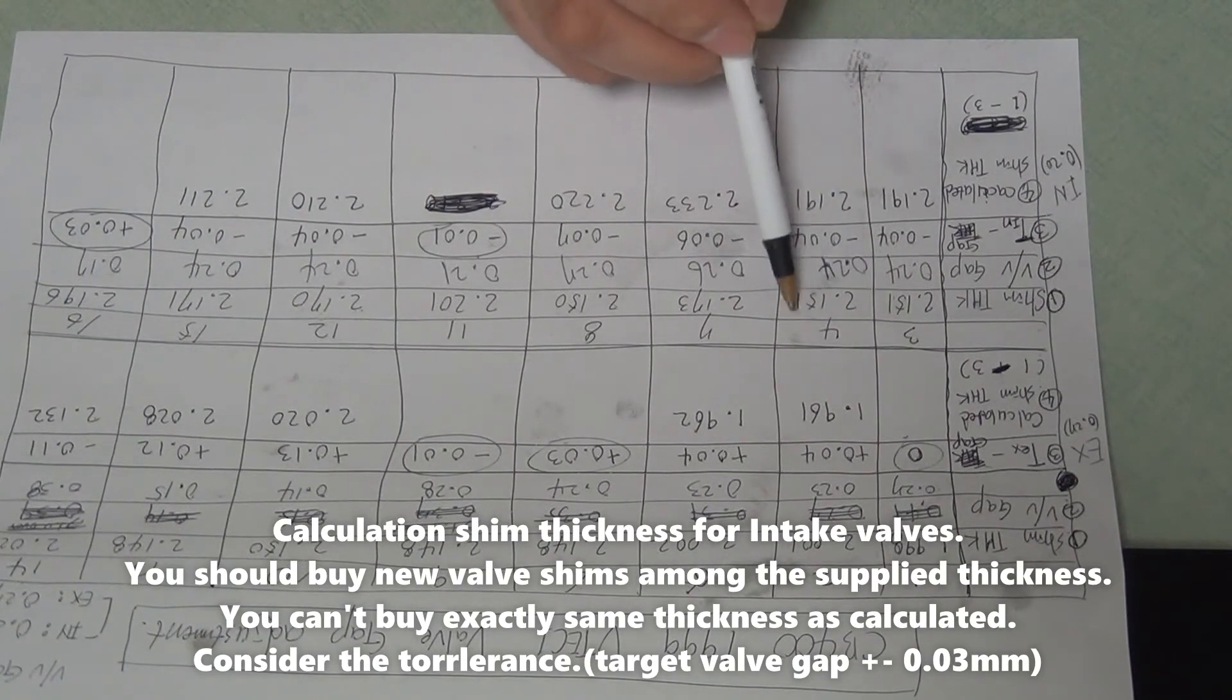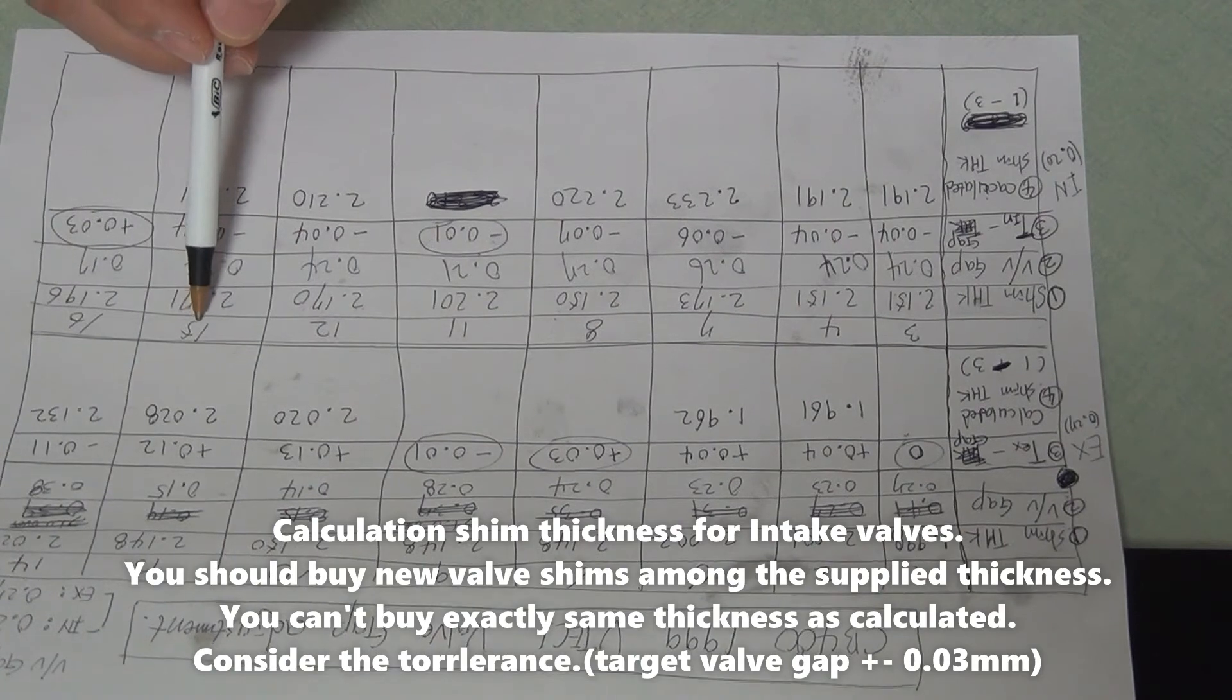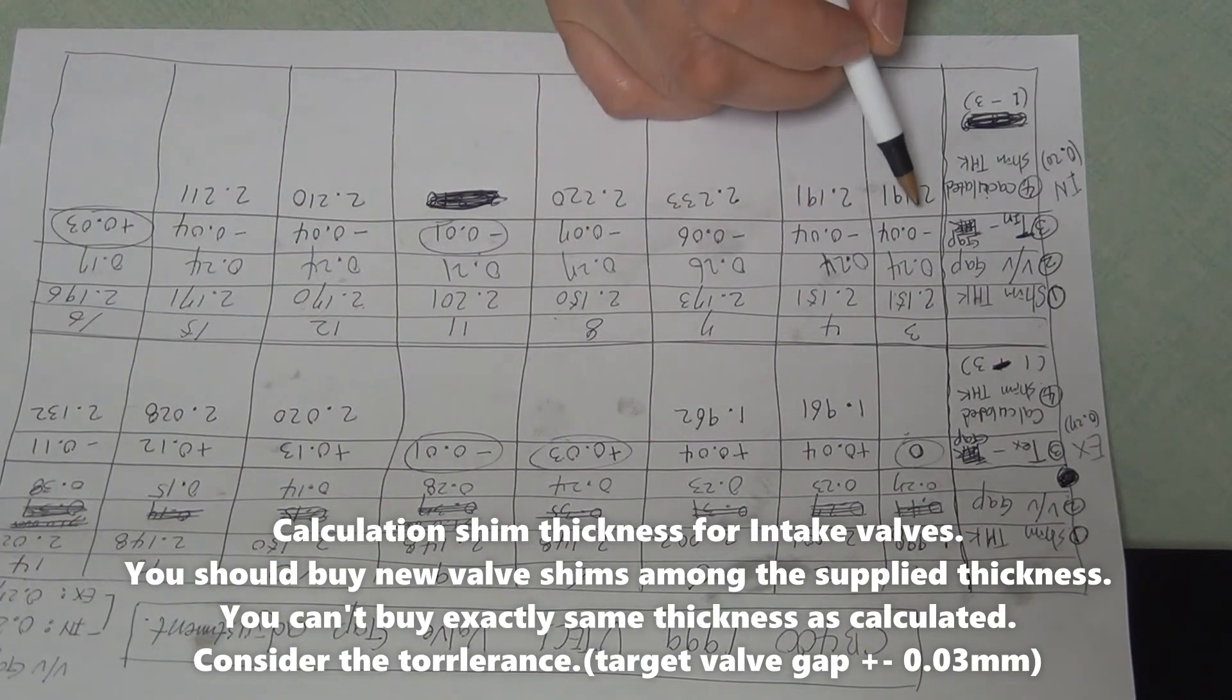Target intake minus measured gap. The valve number 3, 4, 7, 8, 11, 12, 15, 16. The number is like this.